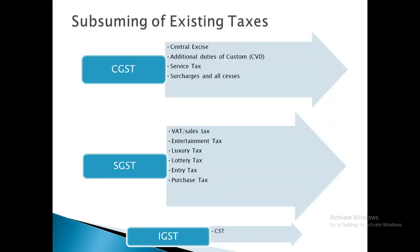Now, the subsuming of existing taxes under CGST — Central Goods and Services Tax. The taxes subsumed include central excise duty, additional duties on customs (CVD), service tax, and all surcharges and cesses. These are all subsumed into one tax: the CGST. Next is SGST — State Goods and Services Tax.